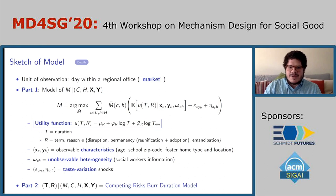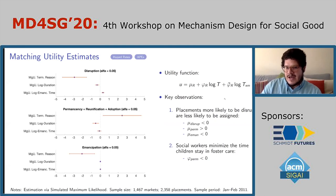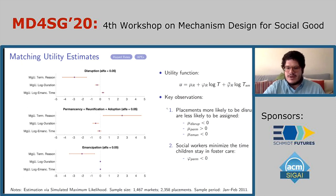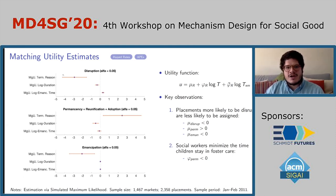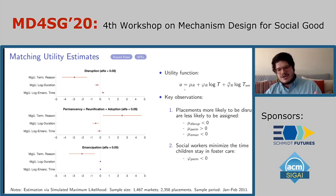The estimates of the utility function show two key results. First, placements that are more likely to be disruptive are less likely to be assigned in the first place. We can see this through the value of mu: the marginal utility of a disruption is negative and statistically significant. This means that if a placement is seen ex ante as more likely to be disrupted, it has a lower payoff and hence is less likely to be assigned.